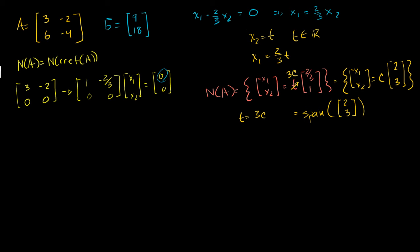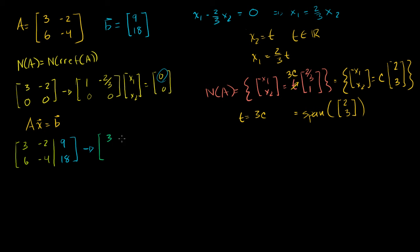Another interesting thing, especially to relate to what we did in the last video, is finding the solution set to Ax equals b. To do that, we set up an augmented matrix: 3, minus 2; 6, minus 4, augmented with b — 9, 18. We put the left-hand side in reduced row echelon form. Keeping the first row the same gives us 3, minus 2, 9. Replacing the second row with the second row minus 2 times the first: 0, 0, 0.